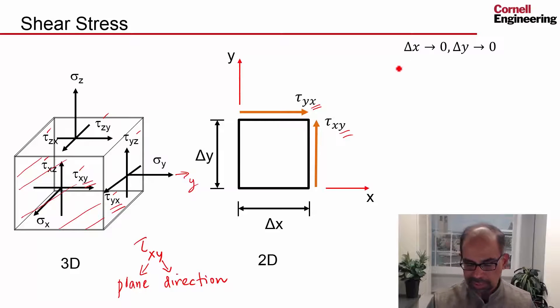I'm looking in the limit as delta x, delta y, and delta z tend to 0, so I'm looking at this vanishingly small chunk of material. If I apply rotational equilibrium to this vanishingly small chunk of material, I can show that these two are the same.